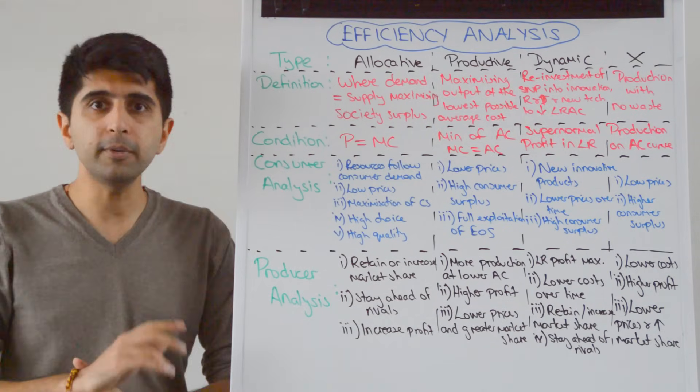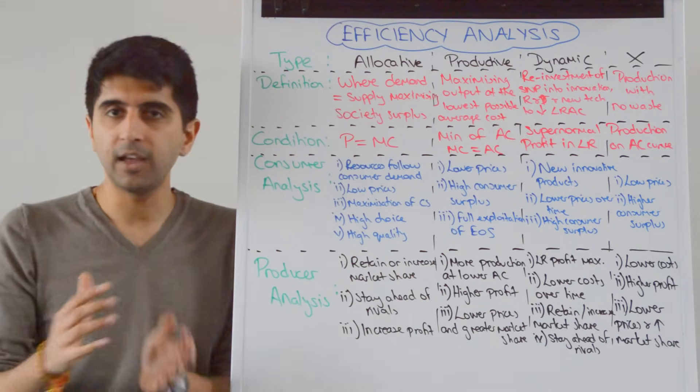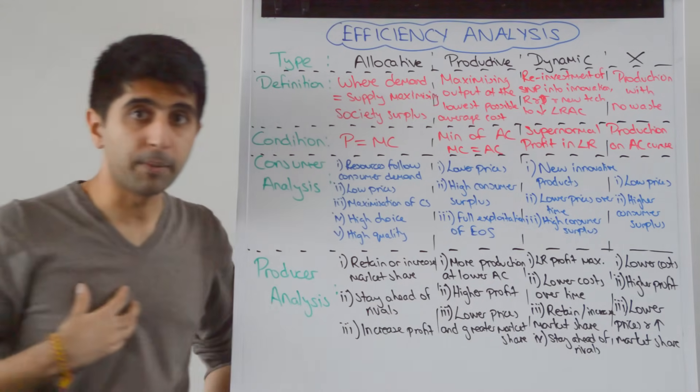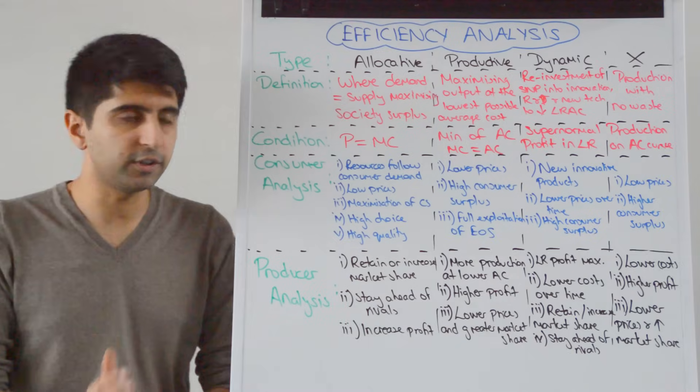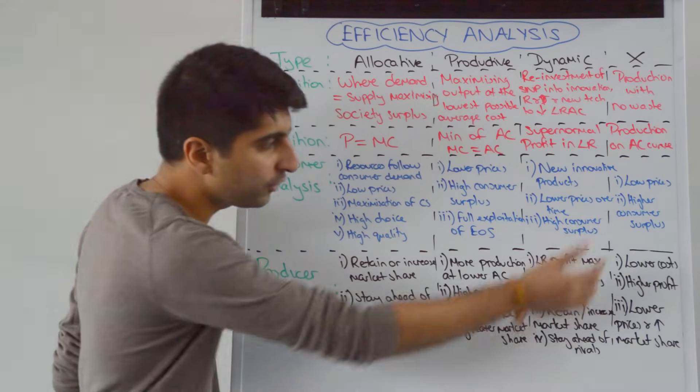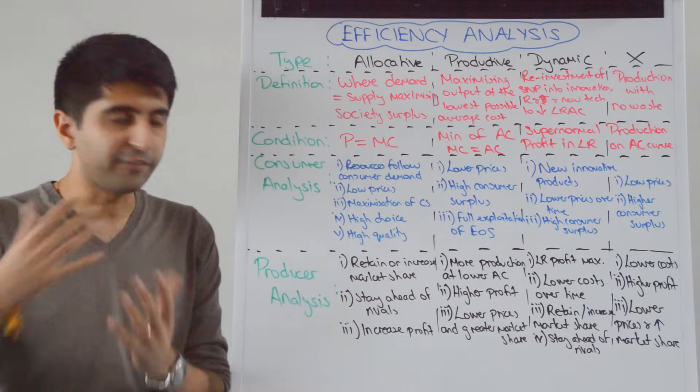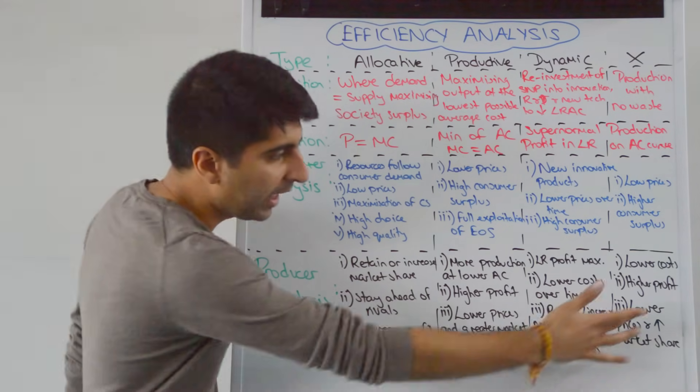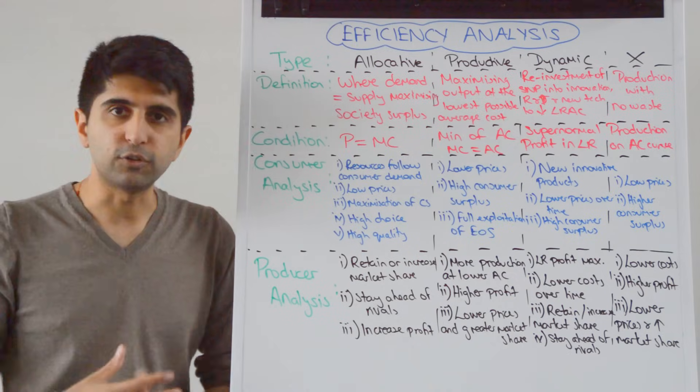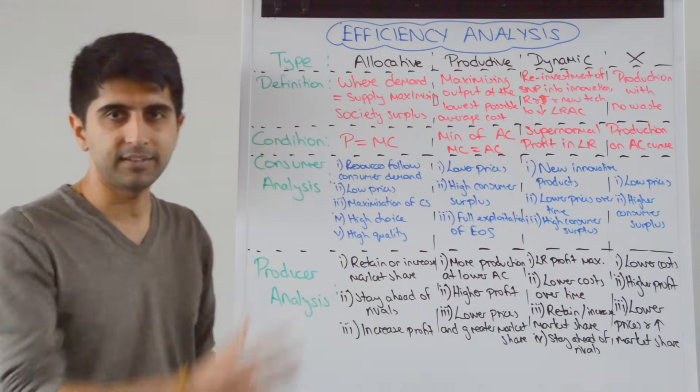Why is that good for consumers? If costs are being minimized at whatever production point, it means that consumers may get lower prices if those lower costs are passed on to consumers. And that means higher consumer surplus. For the producer, why is it good? It means lower costs, therefore higher profit. And it means they can pass on lower prices to the consumer to increase or retain their market share to stay ahead of their rivals.